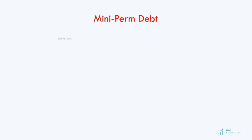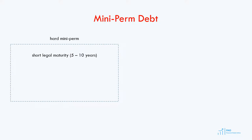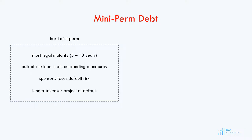Let's now discuss the features of mini-perm loans. There are hard and soft mini-perm loans. The hard mini-perm loan has a short legal maturity, such as 5 or 10 years, and the bulk of the loan is still outstanding at maturity. Legal maturity means that if the project does not repay the loan at its maturity, the project will be in default, so the lenders can take over the project. Hard mini-perm loans are not well suited for project finance transactions because of the additional refinancing risk they introduce.